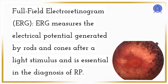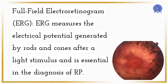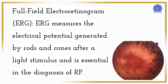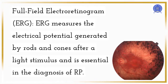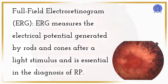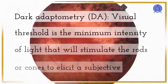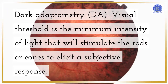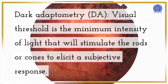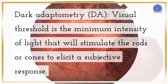Full field electroretinogram, ERG, measures the electrical potential generated by rods and cones after a light stimulus and is essential in the diagnosis of RP. Dark adaptometry, DA, measures the visual threshold — the minimum intensity of light that will stimulate the rods or cones to elicit a subjective response.